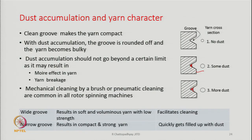Wide groove always gives a soft and voluminous yarn and facilitates cleaning. Narrow groove results in compact and strong yarn but quickly gets filled with dust. Both types have their own advantages and disadvantages. There are four different types of groove shapes that can be broadly classified into two groups: wide groove and narrow groove. Keeping in mind the type of yarn needed and the dust content in the sliver, one must choose the right groove geometry for the rotor.